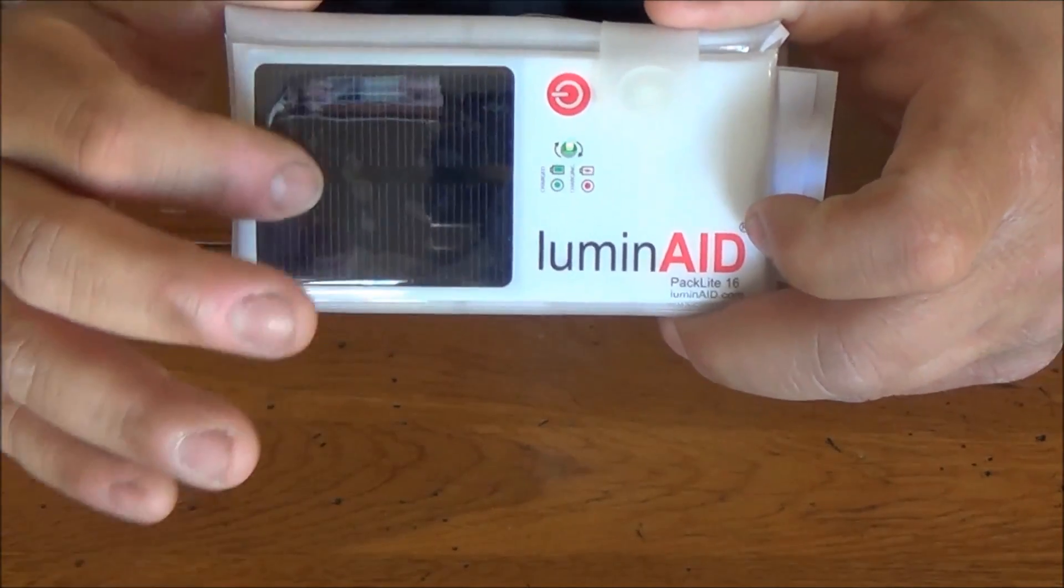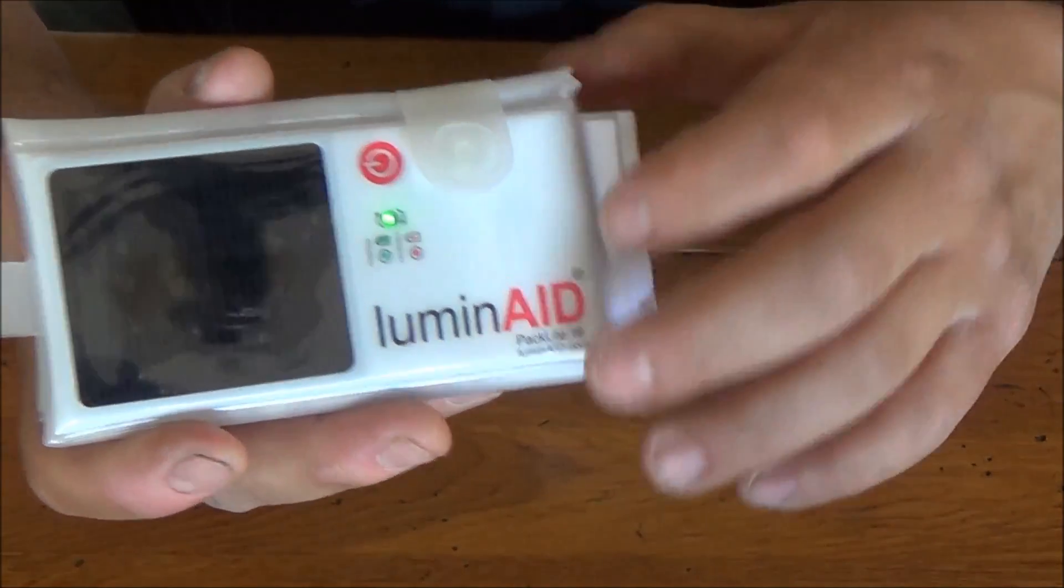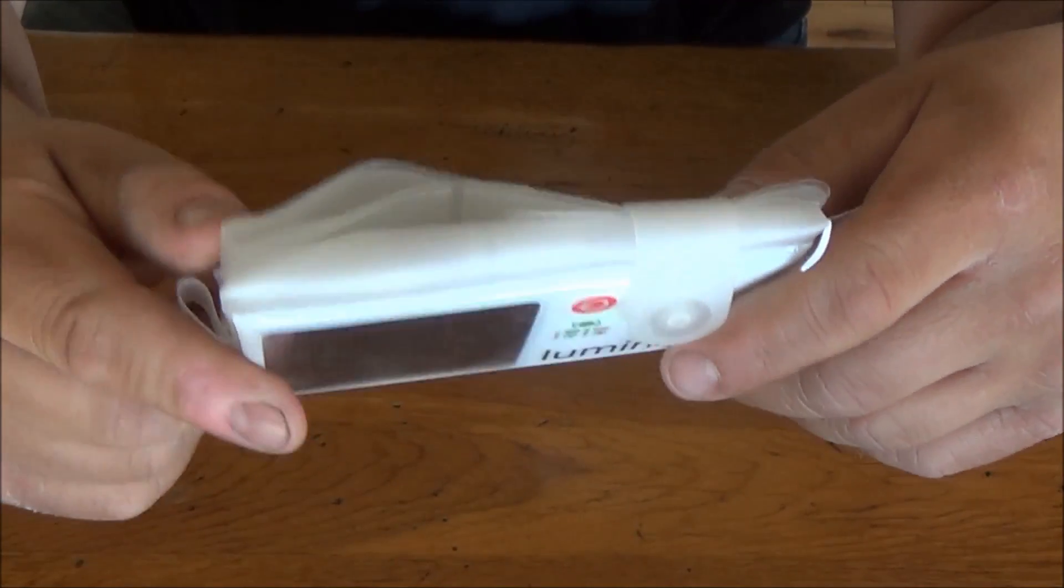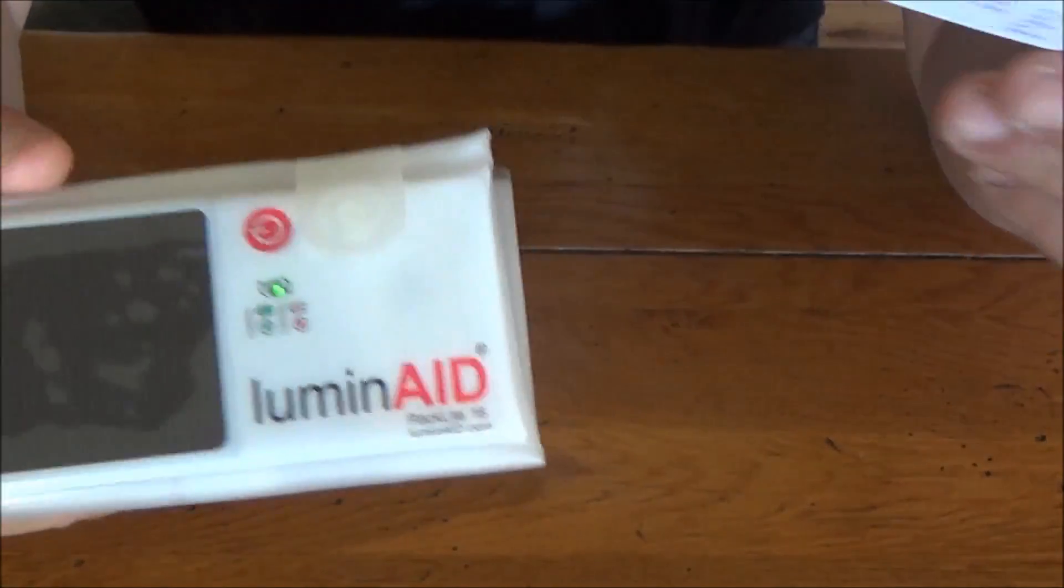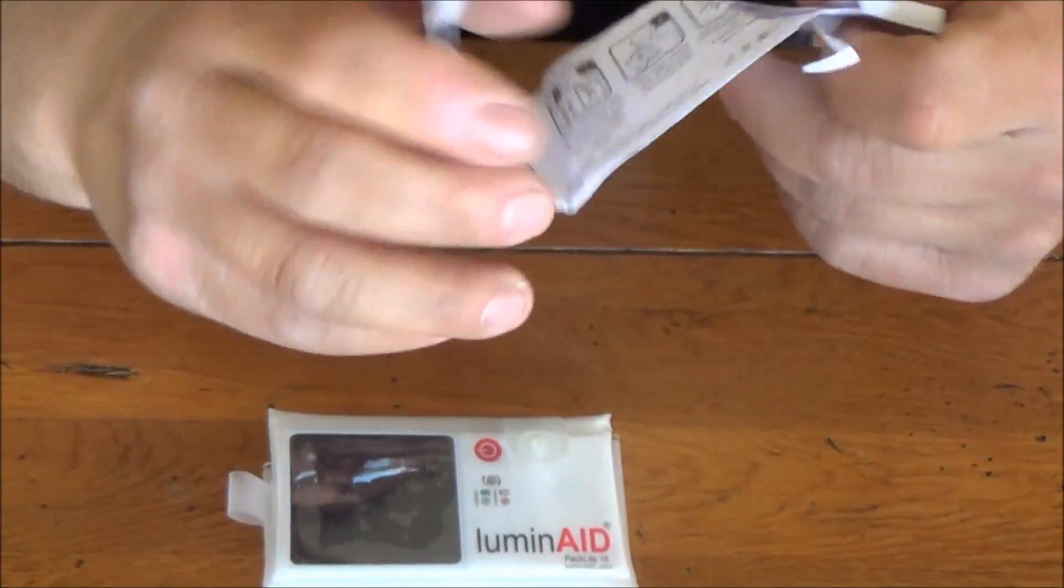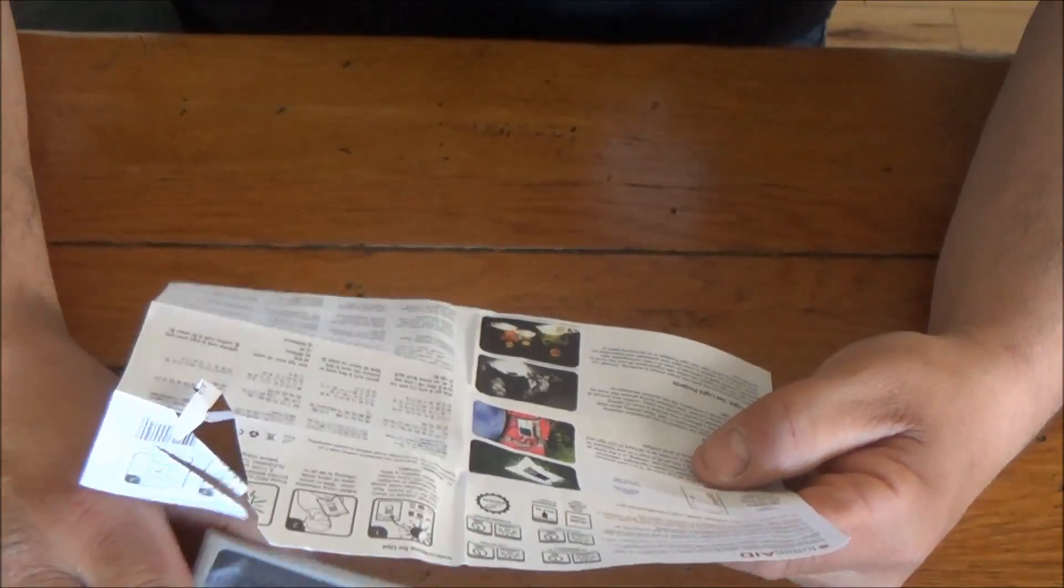Obviously you can see here is the solar panel. This only has regular rechargeable batteries in it and it's pretty unique because it's inflatable. Well here are the directions on it and basically what it does is it's an inflatable light.